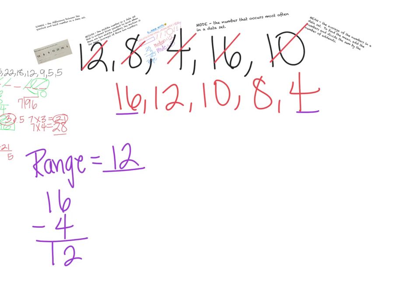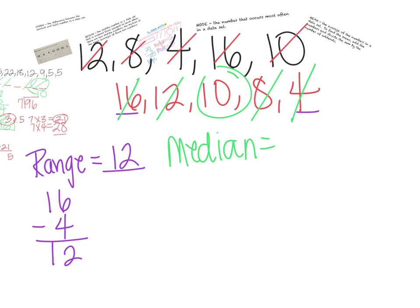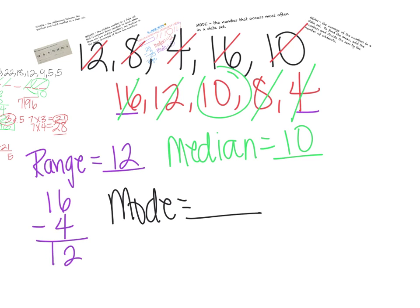Now, how do we find the median? The median is the middle number. We'll start from the left side, cross out, cross one out over here — cross out, cross out. Our median is 10. What about the mode? Do we have a mode for this data set? Nope. For this data set, we don't have a number that occurs most. So we will leave it blank — we do not have a mode for this one.